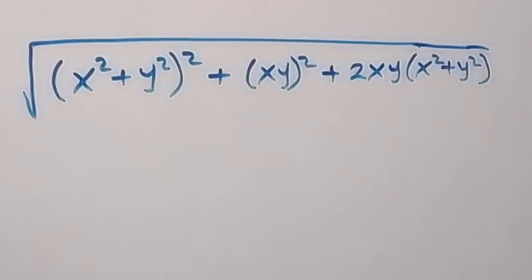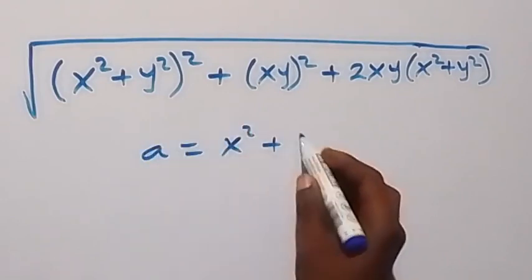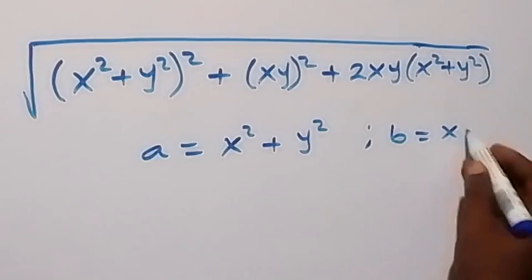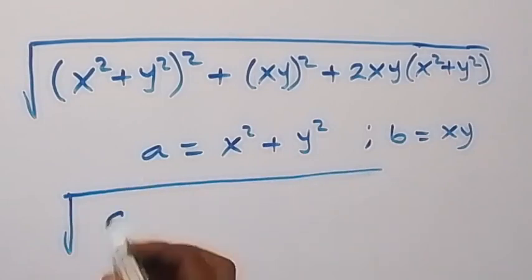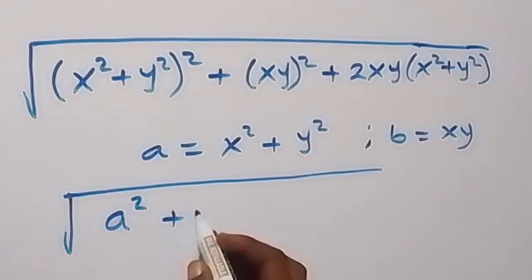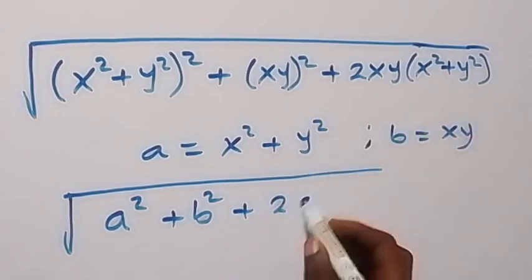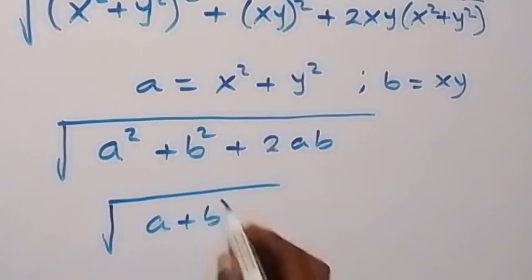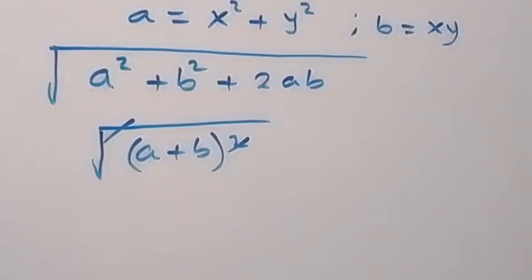From here we can let a equal x squared plus y squared, and let b equal xy. Then what we have becomes square root of a squared plus 2ab plus b squared. This can be written as square root of a plus b, all squared, which means the square cancels the square root, giving us a plus b.